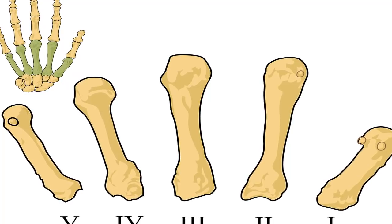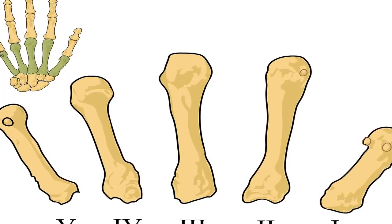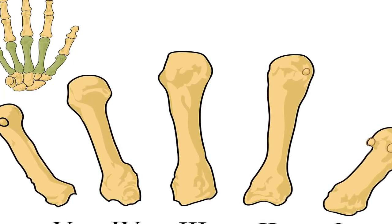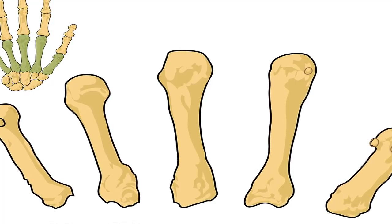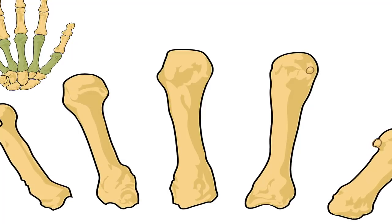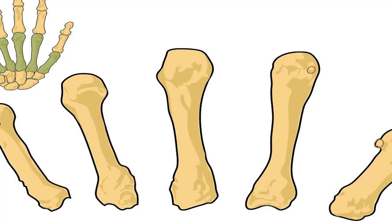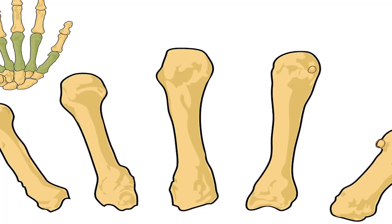Complications of osteoporosis: in addition to making you more susceptible to breaks and fractures, osteoporosis can lead to other complications. Limited mobility: osteoporosis can be disabling and limit your physical activity. A loss of activity can make you gain weight and increase stress on your bones, in particular your knees and hips. Gaining weight can also increase your risk of other problems such as heart disease and diabetes.